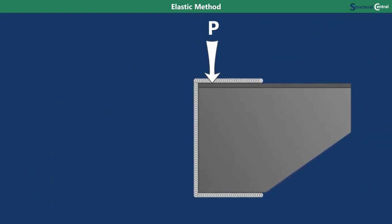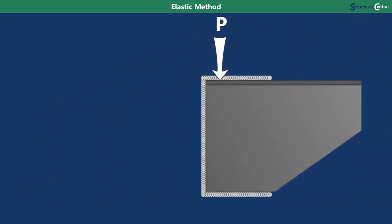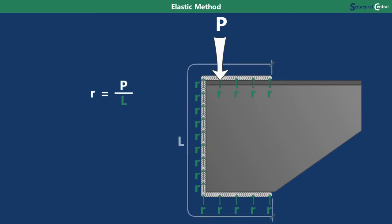As we already mentioned, for a concentric load the stress in the weld is the same at all locations, so the reaction force per unit length R is just the load P divided by the total length of the weld L. The reaction will be in the opposite direction of the applied load so that equilibrium is reached.